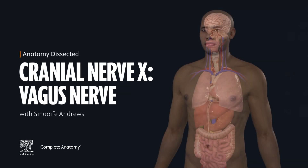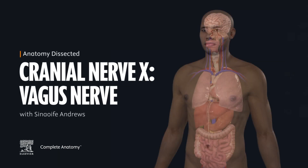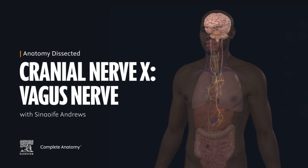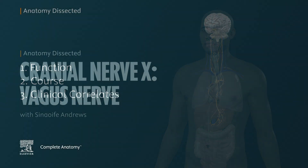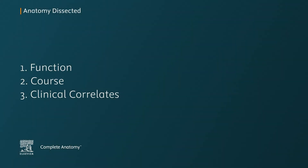Welcome back to Anatomy Dissected by Complete Anatomy. We will be finishing off our cranial nerve series. In this video we will learn about the 10th cranial nerve, also known as the vagus nerve. We will first take a look at the function of the vagus nerve, then we will explore its course, and finally we will take a look at some clinical correlates.